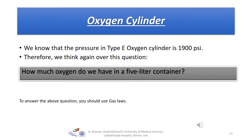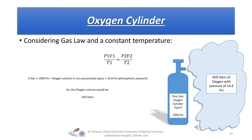When you compress a gas, the volume will decrease and the pressure will go up. We know that the pressure in a type E oxygen cylinder is about 1900 psi. Returning to our question: in a 5-liter container with a pressure of 1900 psi, we will have about 650 liters of oxygen at a pressure of 14.6 psi, which is equal to atmospheric pressure.